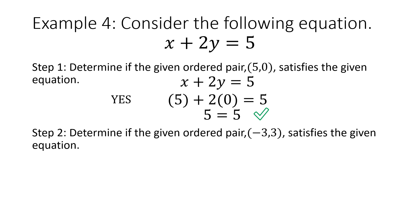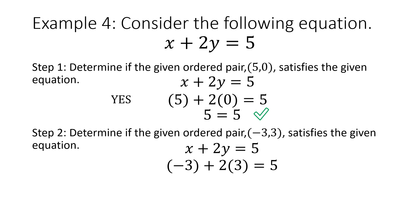I'm going to use the same equation, but this time I'm given a different ordered pair, negative 3 comma 3. I have negative 3 for my x and 3 for my y, so I'm going to substitute those in and simplify to see if it gives me 5. Negative 3 plus 2 times 3 gives me negative 3 plus 6, which equals 3. Since 3 does not equal 5, negative 3 comma 3 does not satisfy the given equation.